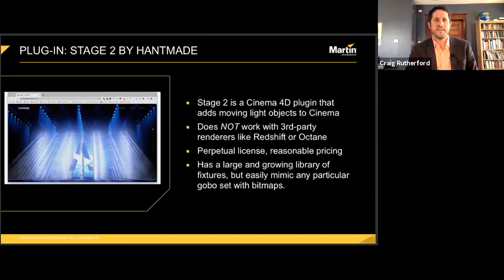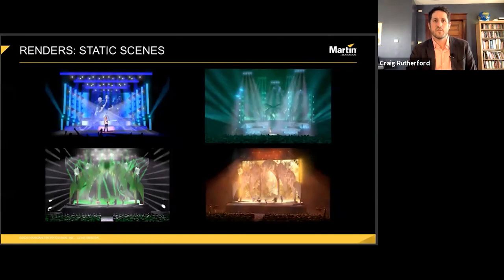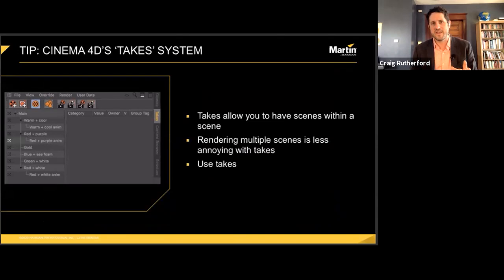Once all the lights are correctly positioned, it is time to start making scenes — which is the really fun part. I typically make about 10 static scenes, and I try to make each one different with a different gobo selection, different colors, positions, just like I would with a real show. I make these with Cinema's takes system, which lets you set up all your scenes and record changes between them, so when you're done you can just render all of your takes with one button instead of having to set up and render each scene individually. It totally streamlines that process.